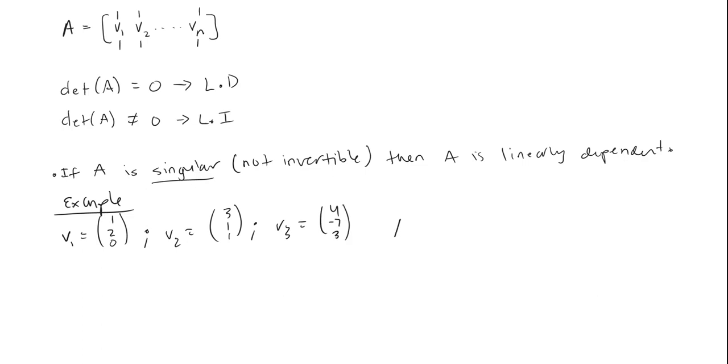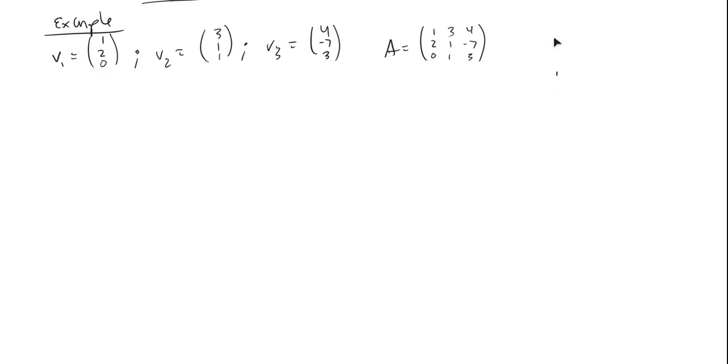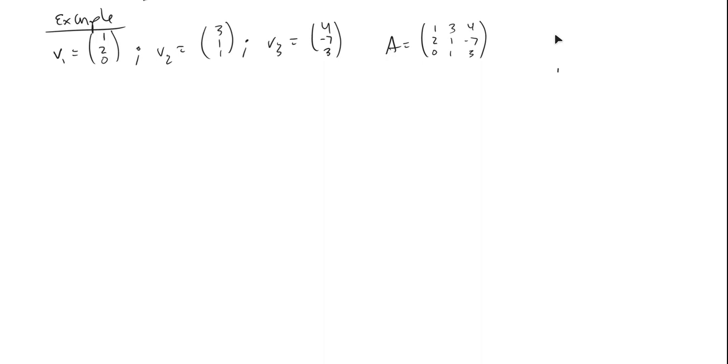Now what we do is we construct A, where A is going to be, take V1 put it right here, 3, 1, 1. Then we calculate the determinant of A.